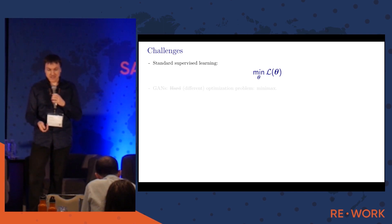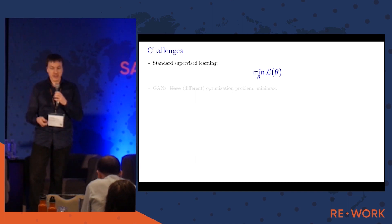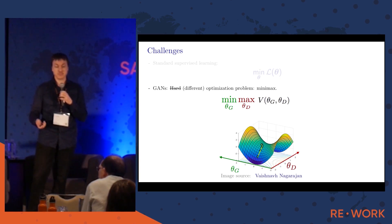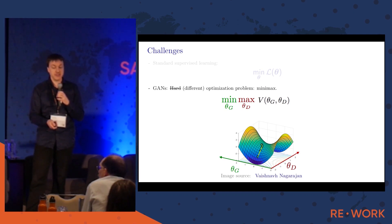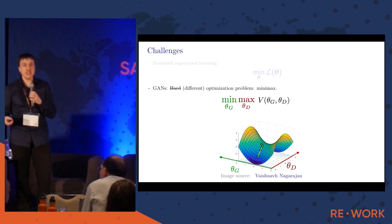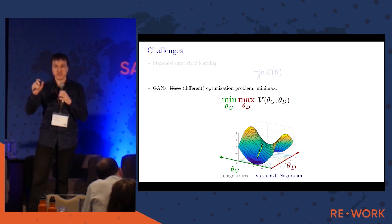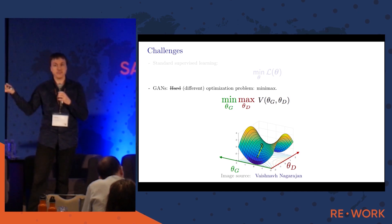In standard supervised learning, you have the parameters of your neural network and you minimize the training error. But for GANs it's not a simple minimization — it's a game. In the original paper it was a min-max problem: theta-g is the parameter of the generator, theta-d the parameter of the discriminator, and they have opposite objectives. More generally, it's a non-zero-sum game where each player minimizes their own objective. The two objectives might not just be a sign switch, and many GAN objectives are two different objectives tied by shared parameters.